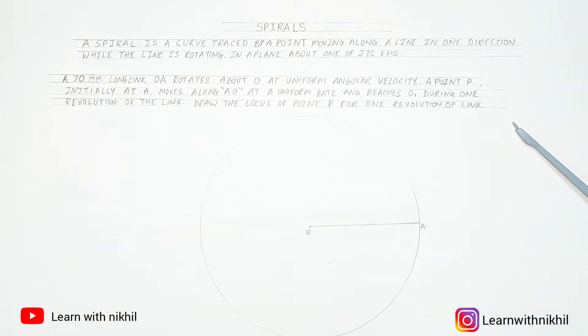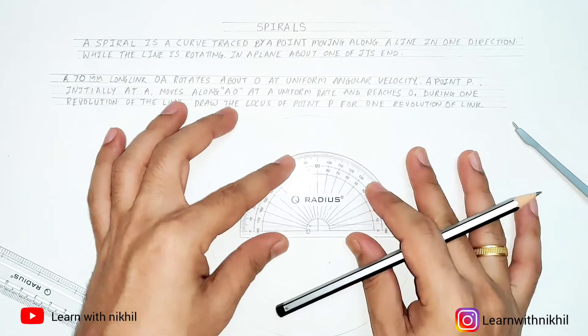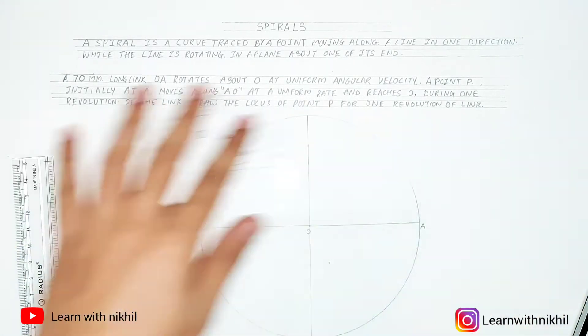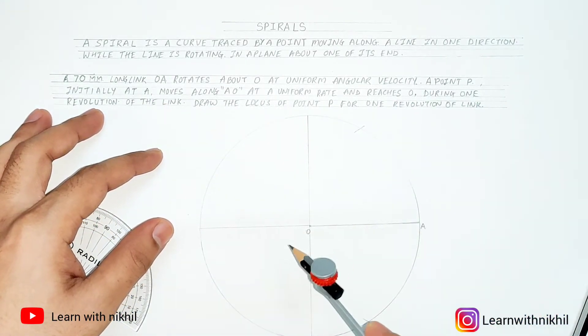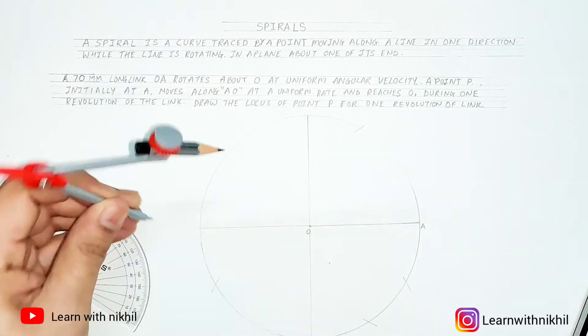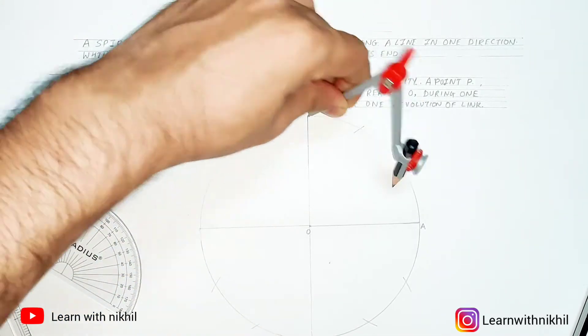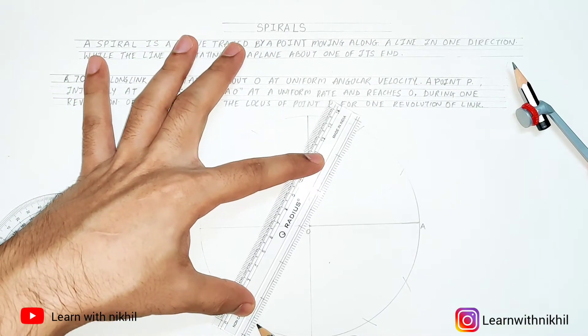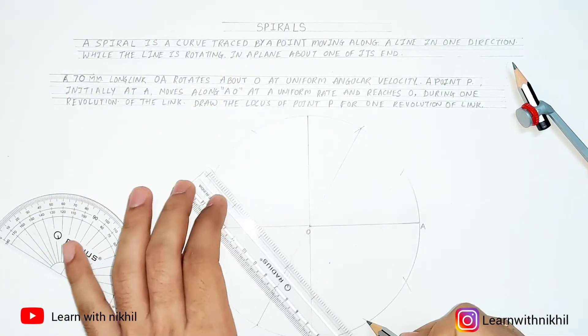Now using this we have to draw a spiral. For that, next step is dividing the circle into 12 equal parts. You know the method how to divide the circle into 12 equal parts. Keep at all the points and then cut the arcs.